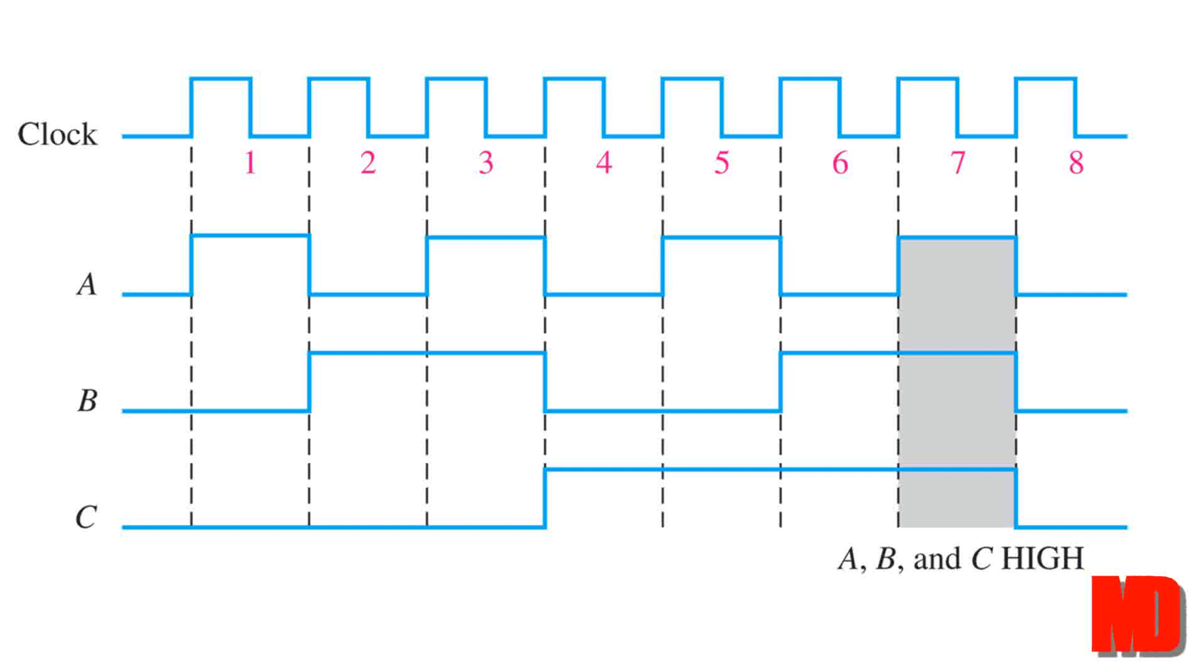Going through our diagram, at bit time 1, we have high, low, low. So, the output here is 0. At bit time 2, we have low, high, low. So the output is 0. At bit time 3, we have high, high, low. Almost, but this output will be 0 as well.